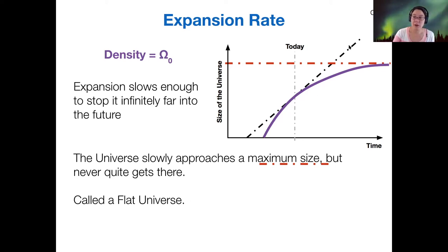So black dashed line was coasting universe. This purple line is our flat universe.